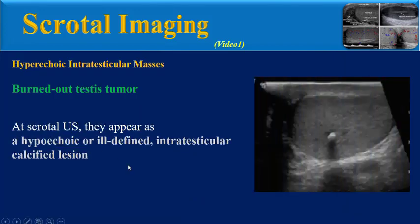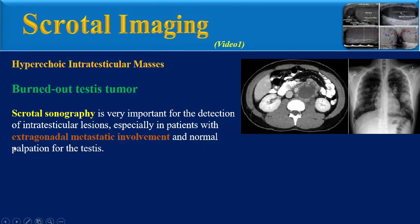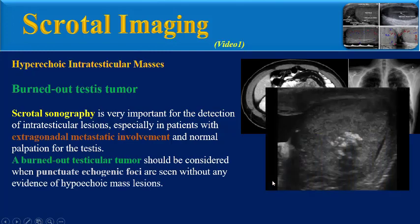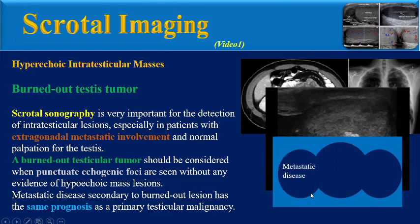At scrotal ultrasound, burned-out tumors appear as hypoechoic or ill-defined intratesticular calcified lesions. Scrotal sonography is very important for detection of intratesticular lesions, especially in patients with extra-gonadal metastatic involvement and normal palpation of the testis. A burned-out testicular tumor should be considered when punctate echogenic foci are seen without any evidence of hypoechoic mass lesions. Metastatic disease secondary to burned-out lesions has the same prognosis as the primary testicular malignancy.